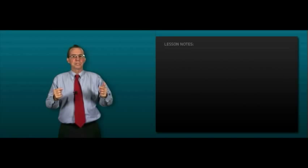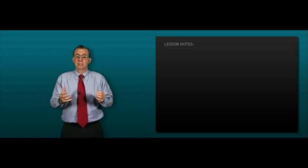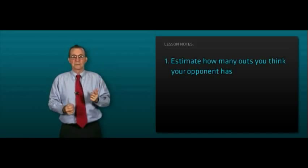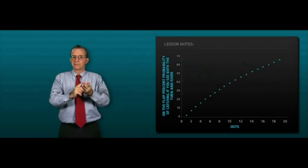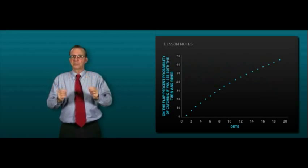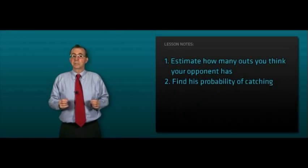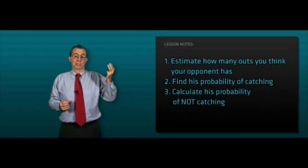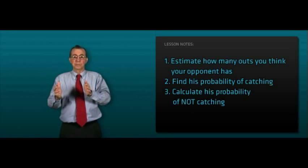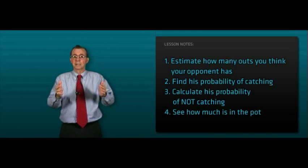You're going to use the same general procedure used when we want our opponent to fold with only one card to come. First, we're going to estimate how many outs we think he has. Two, from the flop graph, we're going to find out his probability of catching based on your estimate. Three, we're going to calculate his probability of not catching. Number four, we're going to take a look at how much is in the pot.